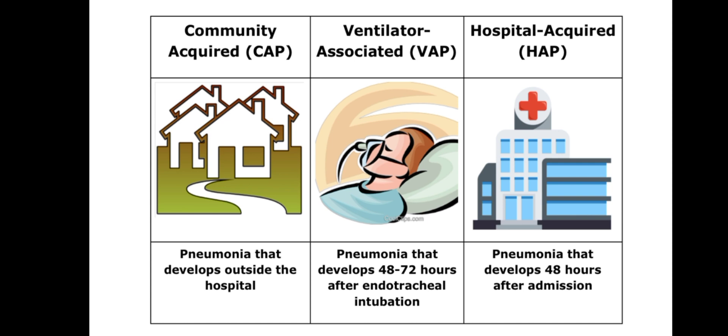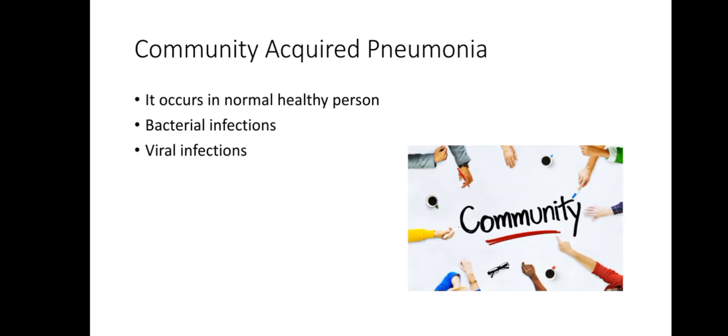Community acquired pneumonia (CAP) is pneumonia that develops outside the hospital. Hospital acquired pneumonia (HAP) is pneumonia that develops 48 hours after admission. Ventilator associated pneumonia (VAP) is pneumonia that develops 48 to 72 hours after endotracheal intubation. If a patient shows symptoms of pneumonia 48 to 72 hours after intubation, that is purely ventilator associated pneumonia.